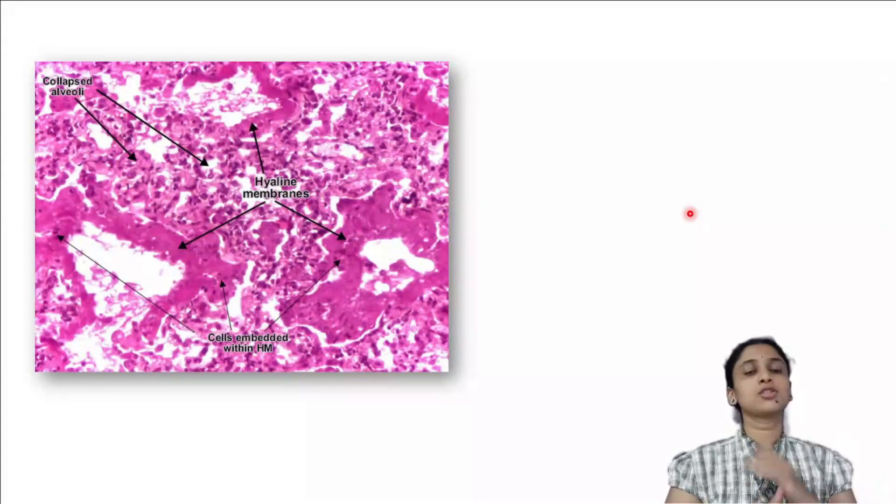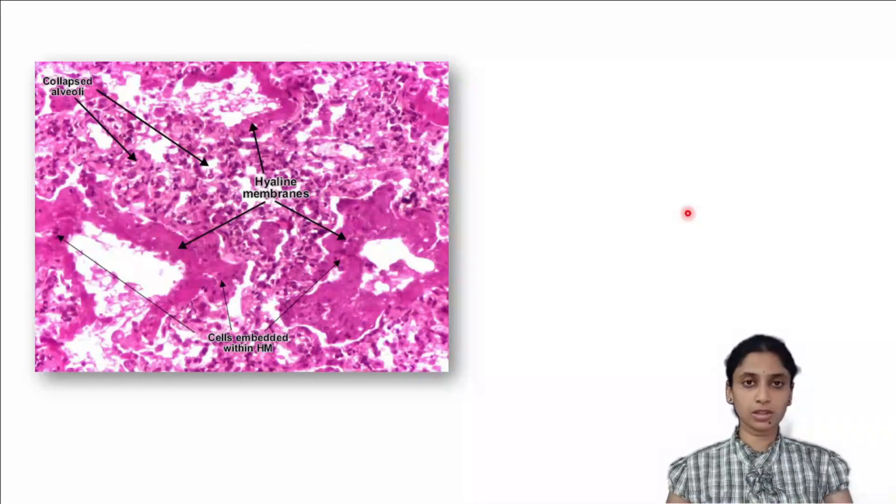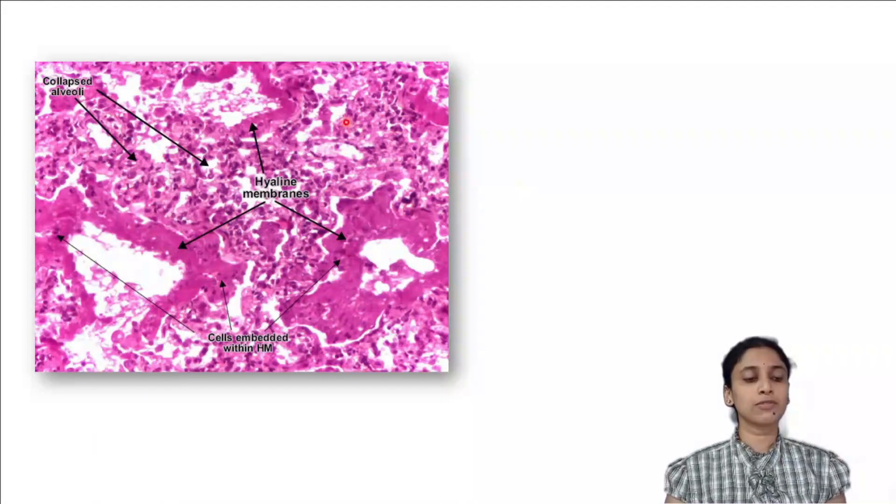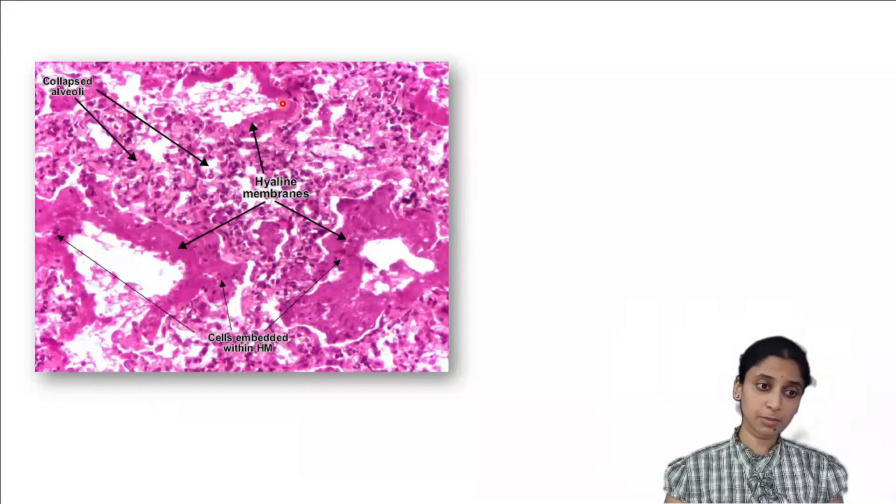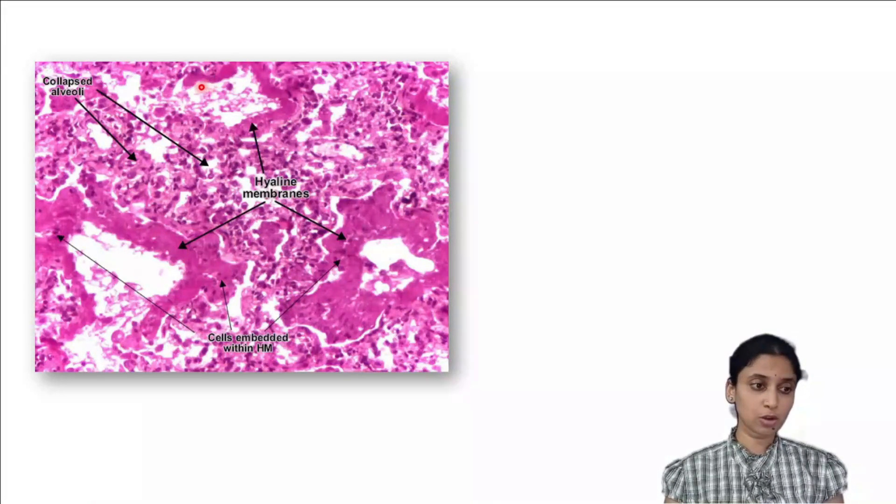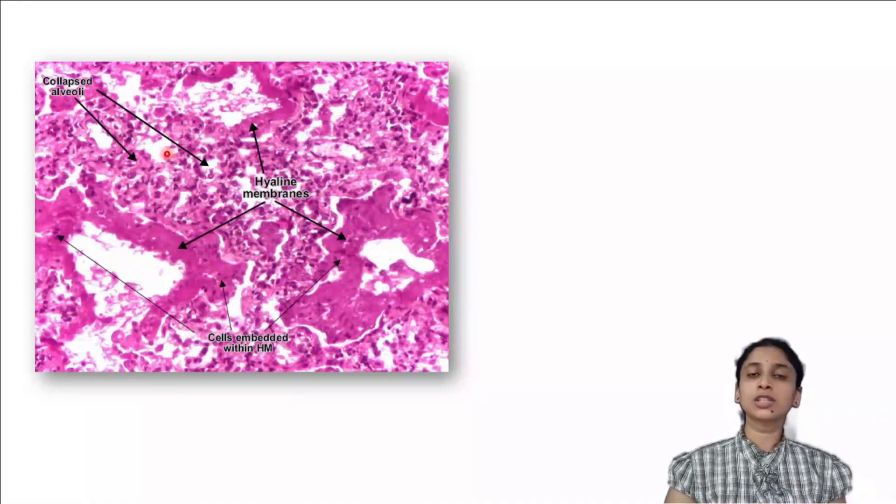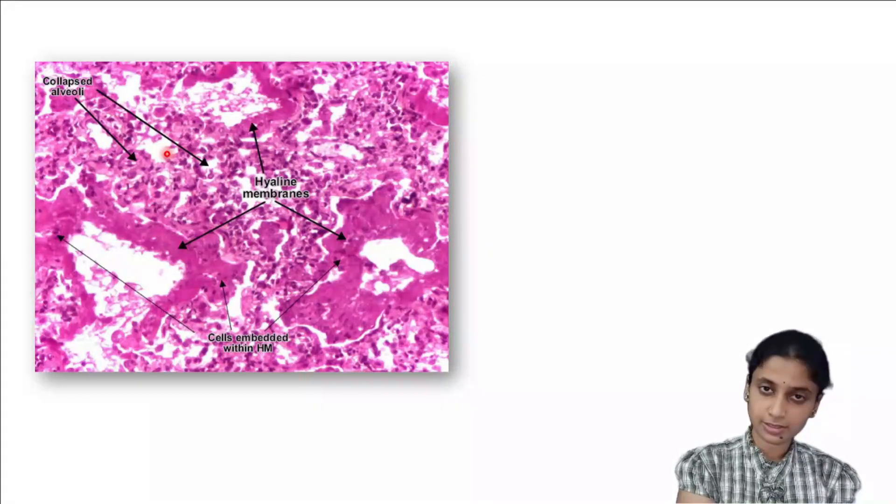This is the histopathological picture of hyaline membrane disease. You can very well make out the presence of hyaline membrane in this alveolus, and you can also see several collapsed alveoli over here. Now you are suspecting hyaline membrane disease in this kid.